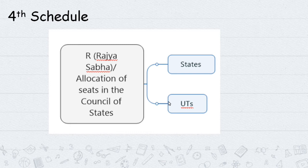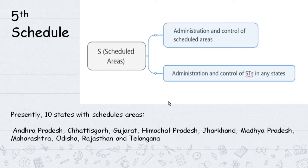The Fifth Schedule deals with administration and control of Scheduled Areas and Scheduled Tribes in any state. The Sixth Schedule handles administration and control of Scheduled Tribes in specific northeastern states. Presently, the Fifth Schedule covers Scheduled Areas across South India and Central India.